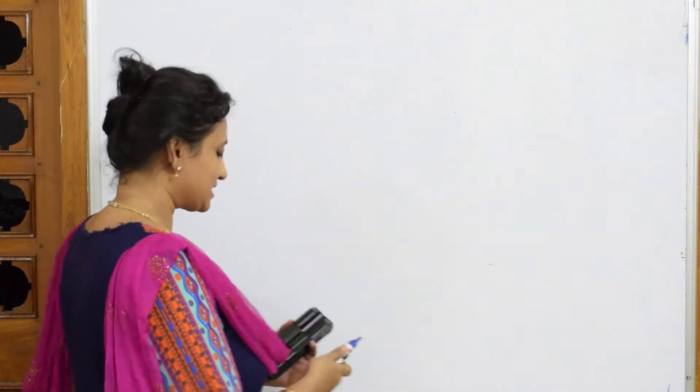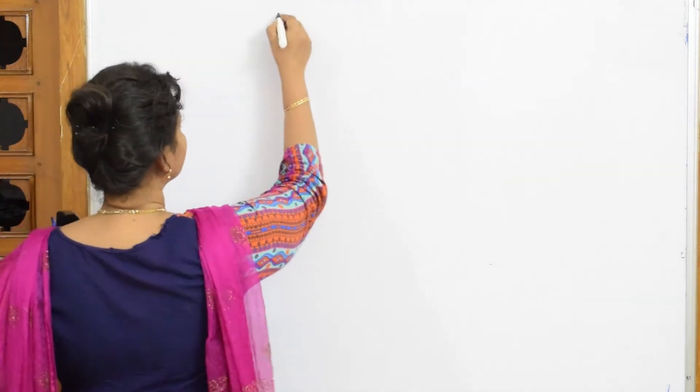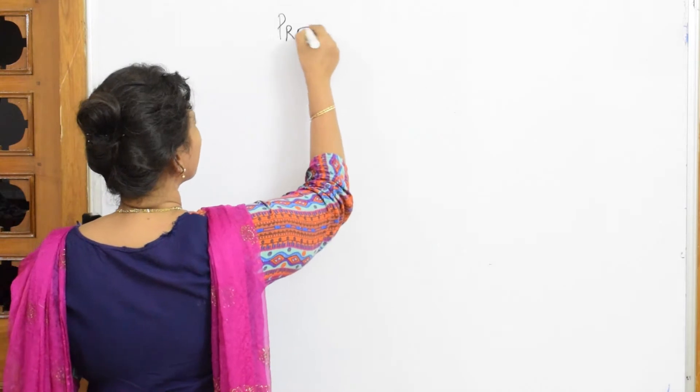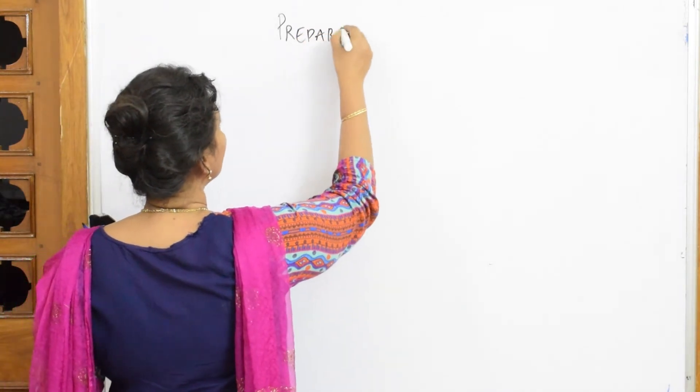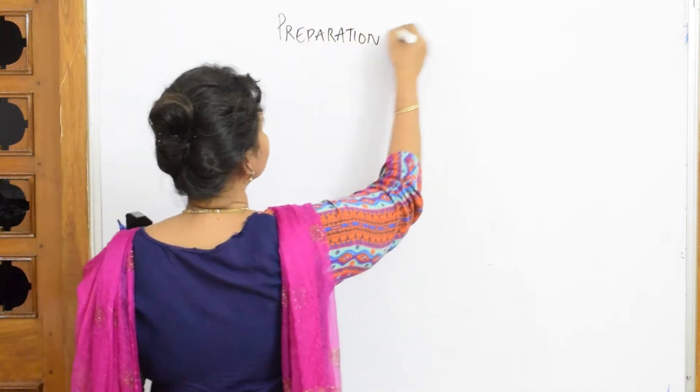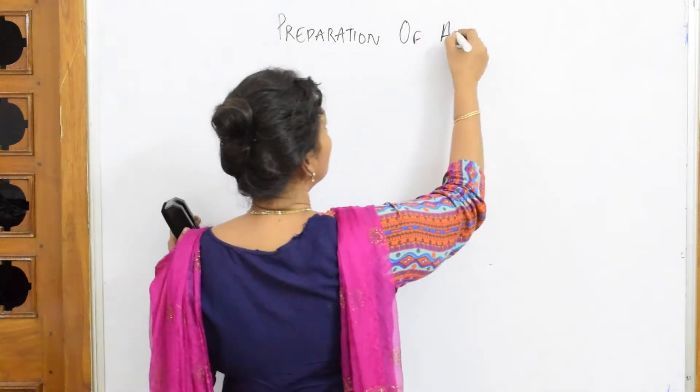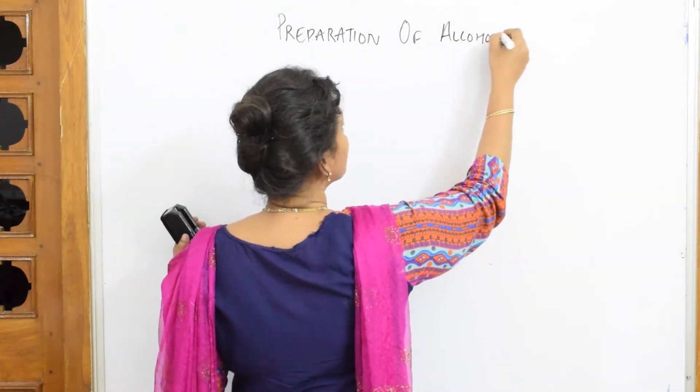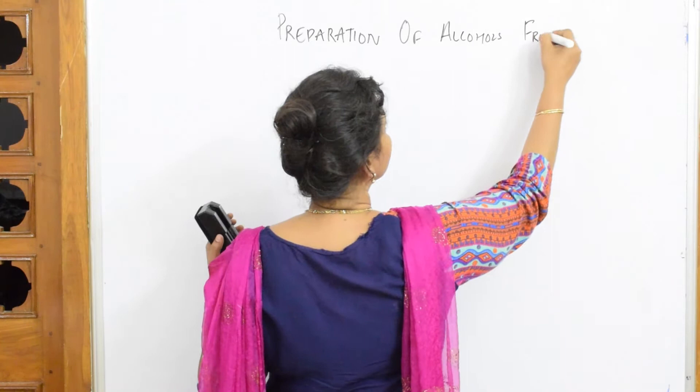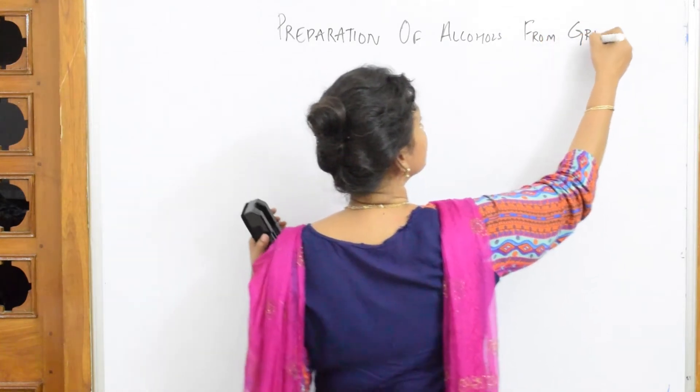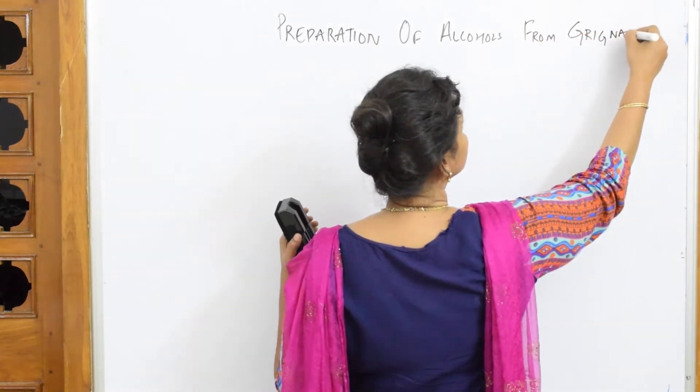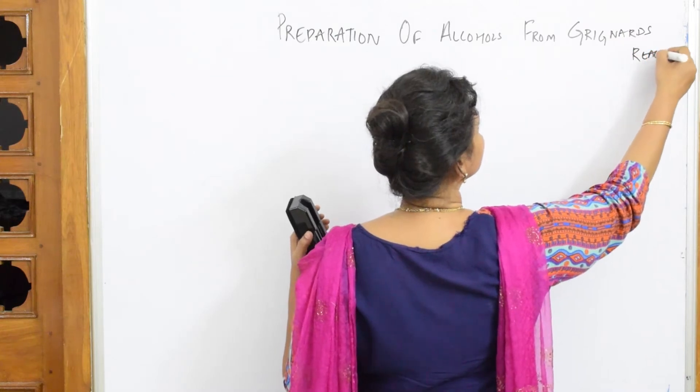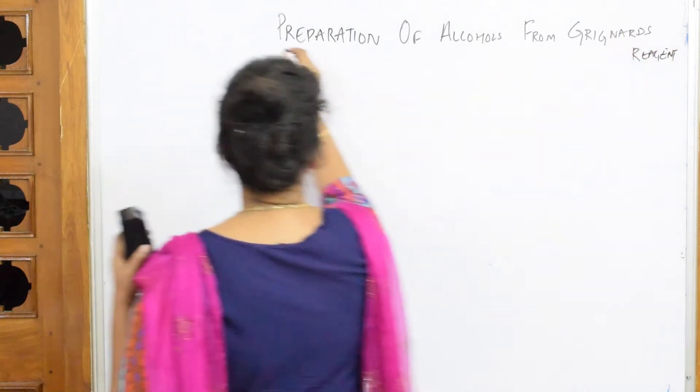Yes, so now we will be preparing alcohols using Grignard's reagent, that is an organometallic compound. So let us see the reaction. Preparation of alcohols from Grignard's reagent. Now let us see.